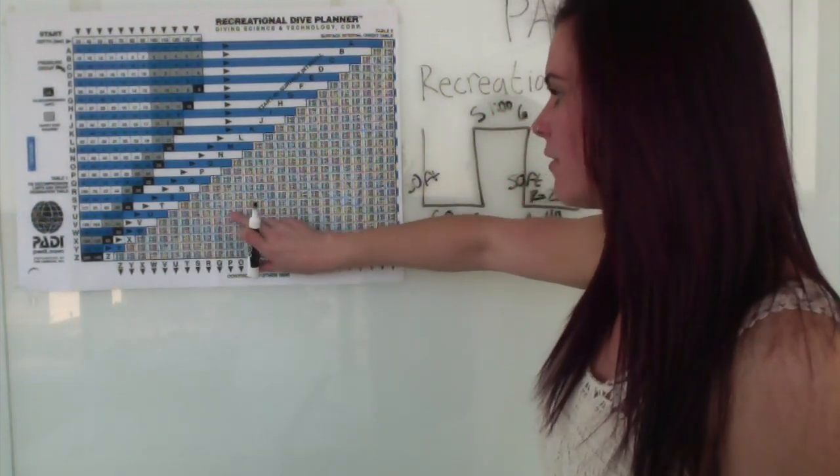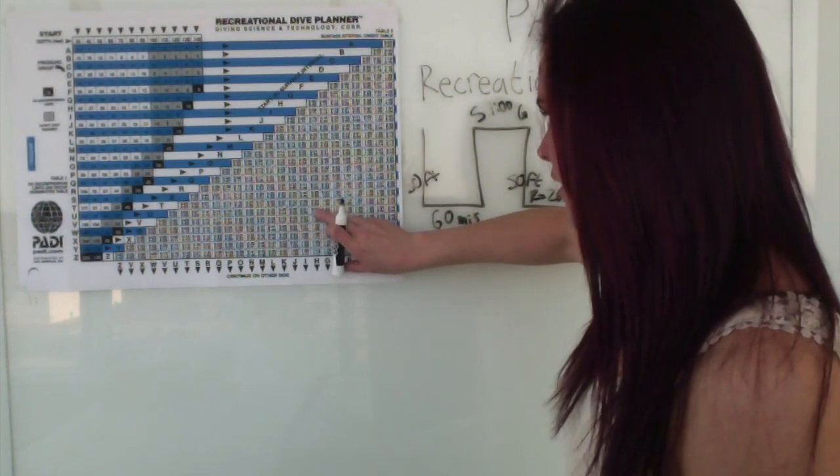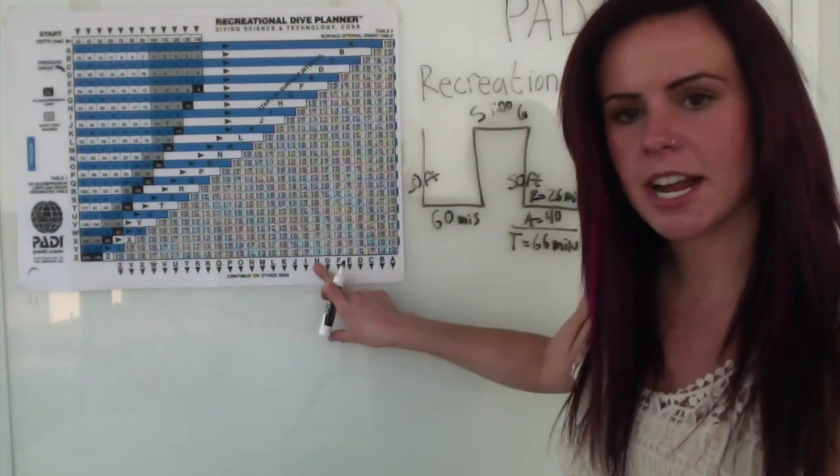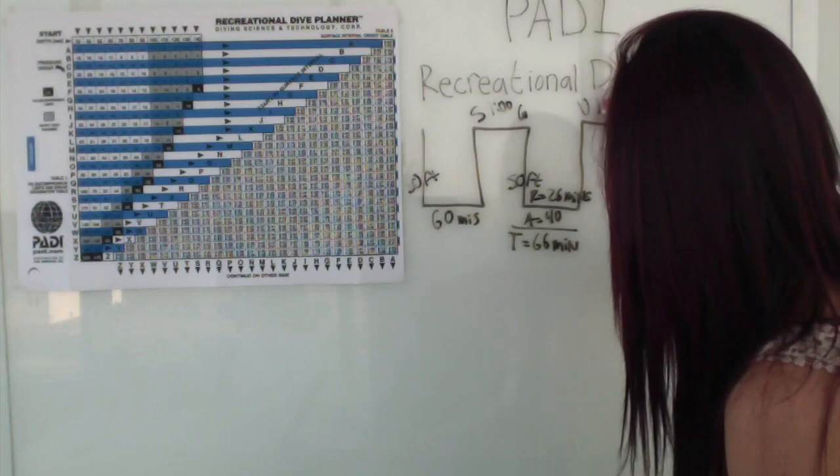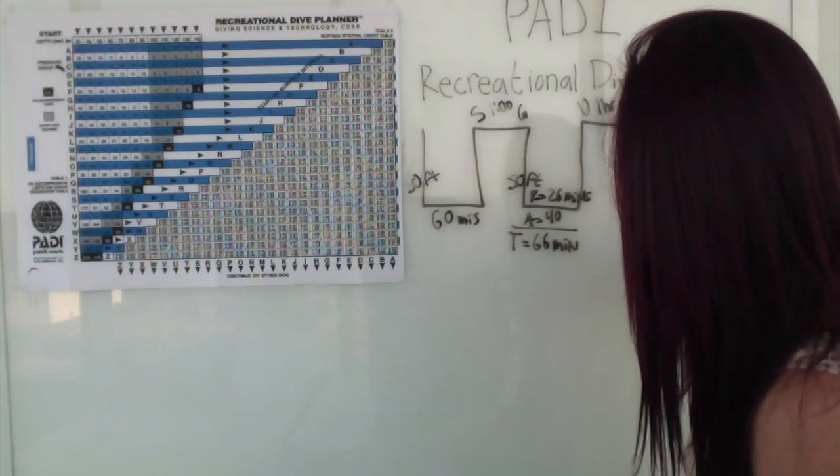Let's say we're hanging out at the top again for another hour. Our new pressure group after that hour is pressure group H. One hour, pressure group H.